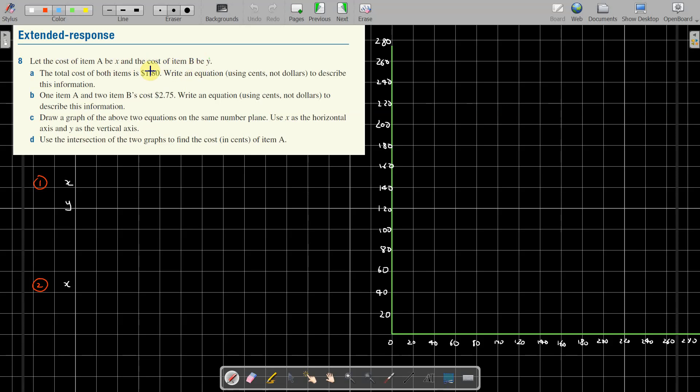Item A, I'm just going to fix that up a bit, going to go red, that's better. Let the cost of item A equal X and the cost of item B equal Y.